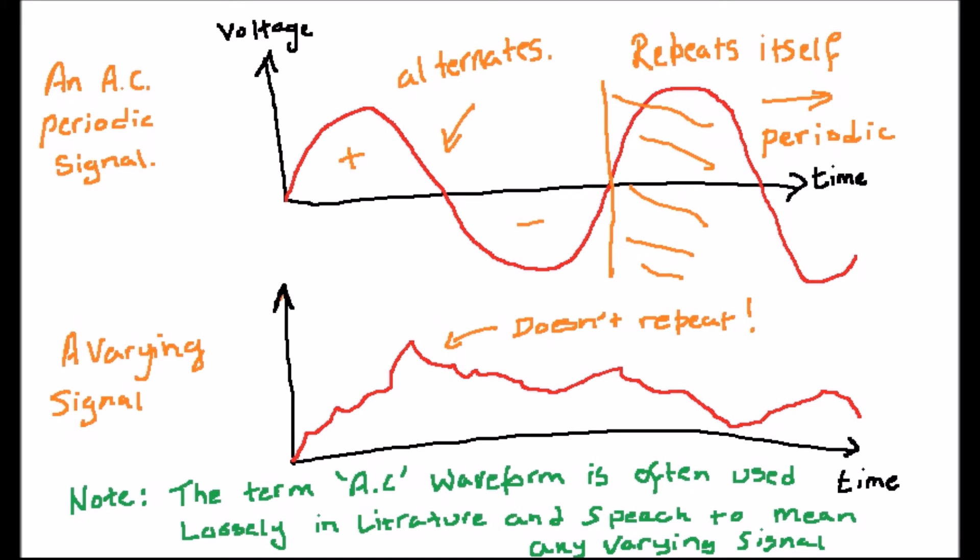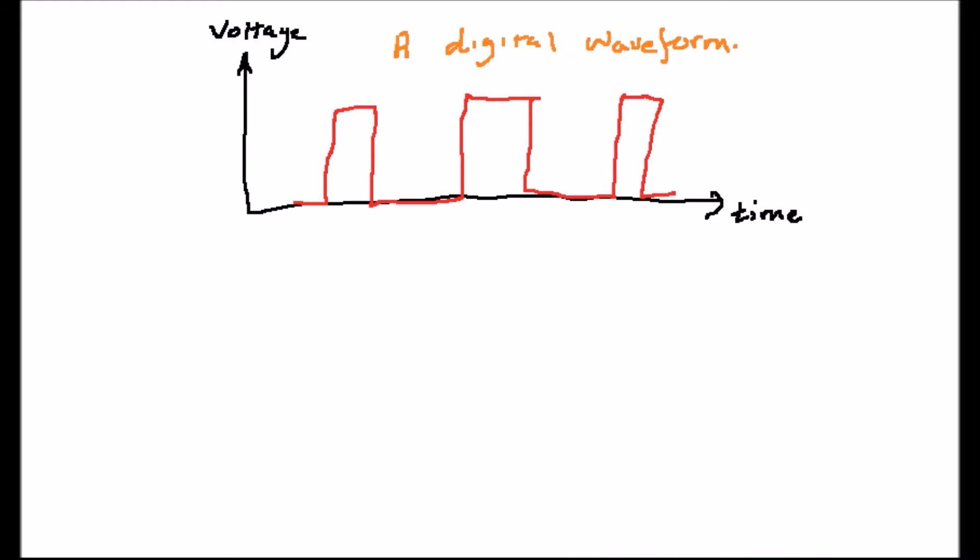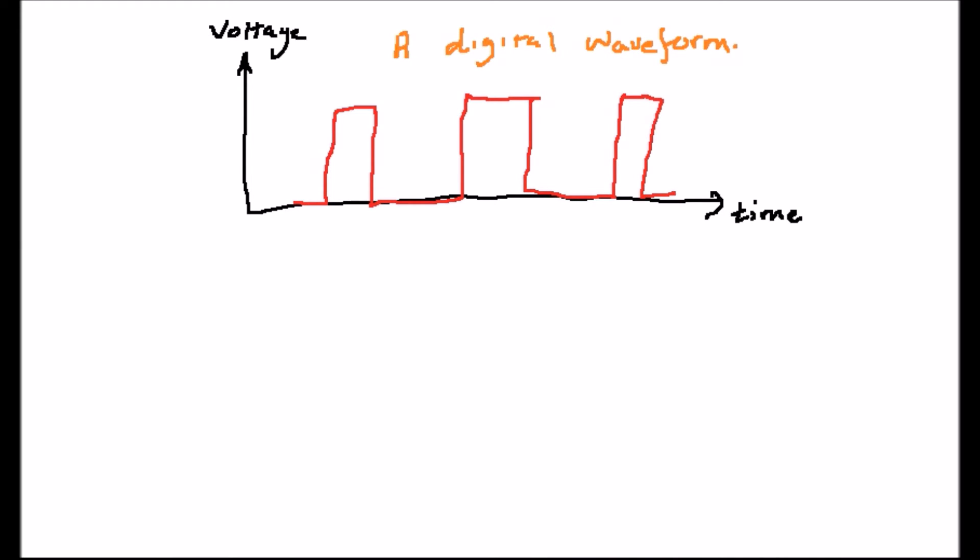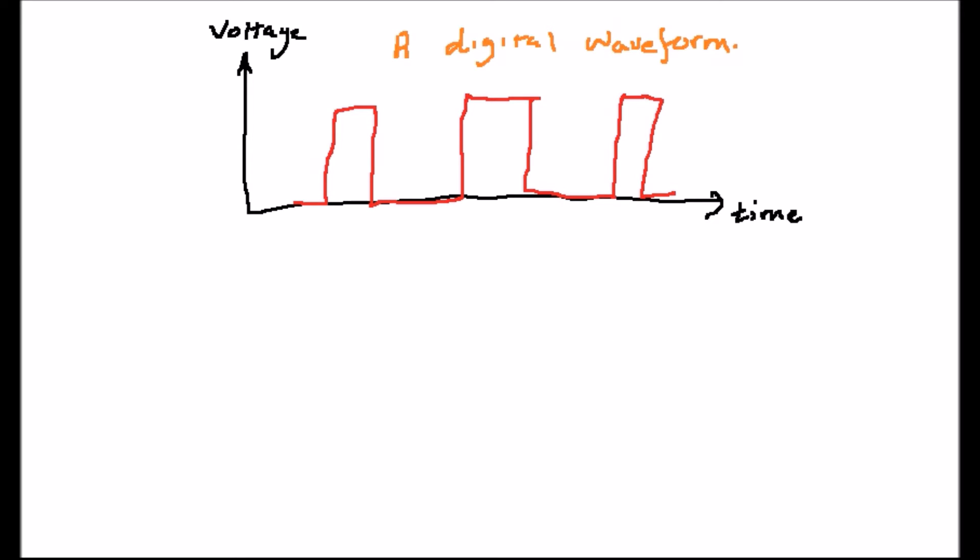There's one further type of signal which I'd like to mention and that's one which appears and disappears and this is called non-continuous or sometimes discrete. One important class of this signal is a digital signal which is either plus 5 volts representing a 1 when the signal is present or 0 volts representing a 0 when it's not.